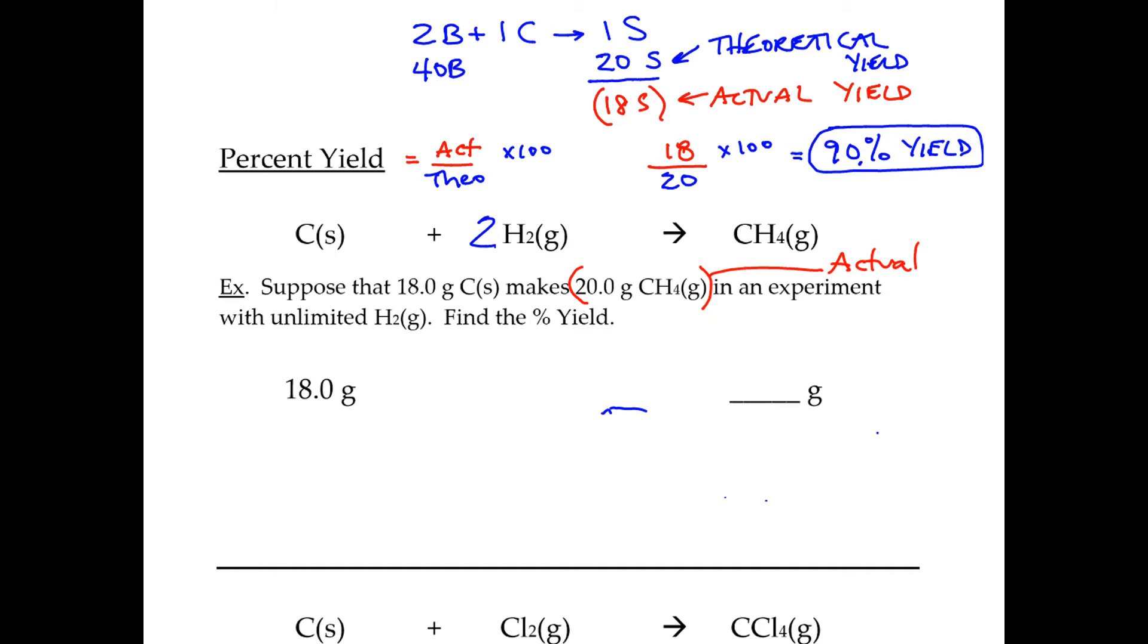You need to figure out the theoretical, which is going to be from the bridge. Theoretical always comes from stoichiometry, which is the bridge. Notice that this is grams, so we have to use the big bridge for this. Big bridge is going to be adding up these from the periodic table. This way is 12, this way is 16. You don't even need to worry about the hydrogen because it says it's unlimited.